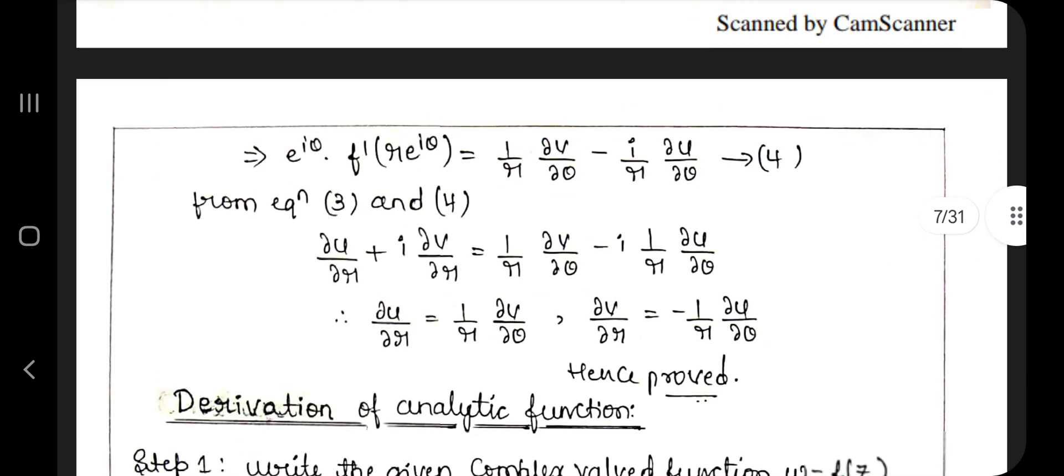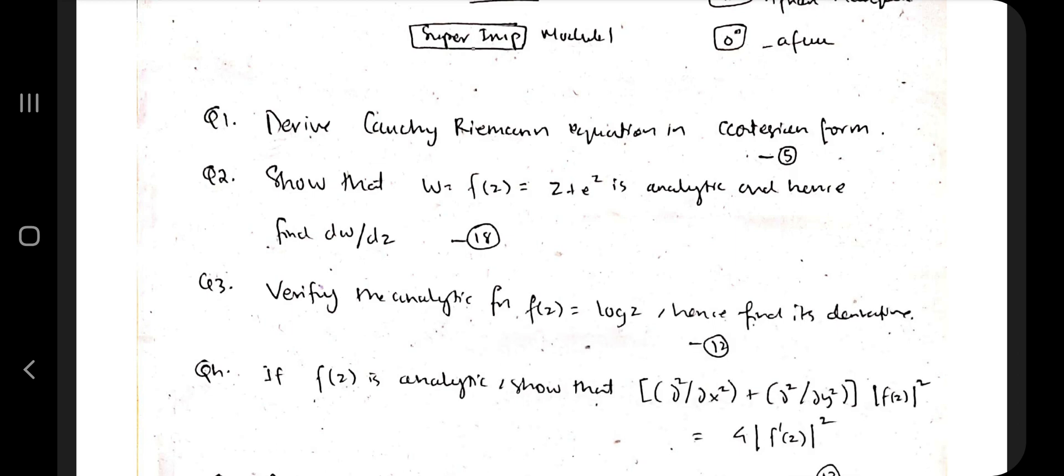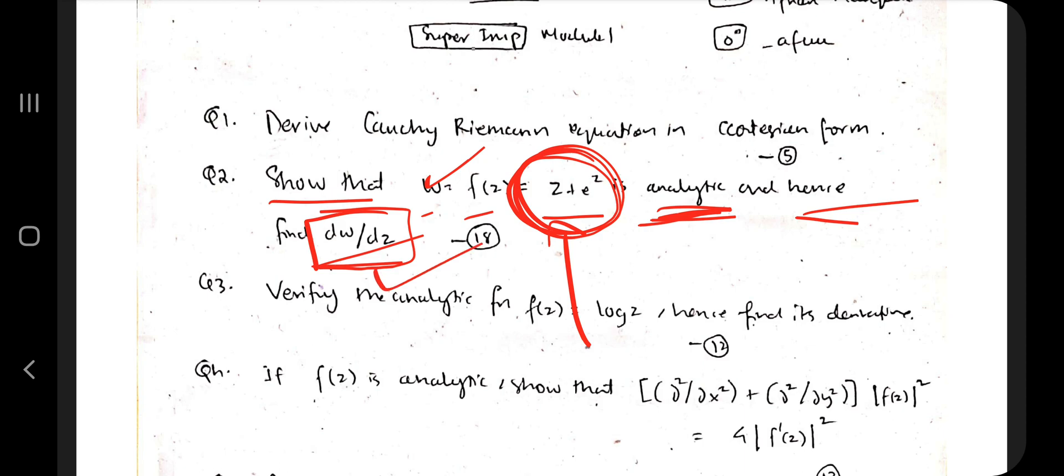Moving on to the second question: w equals z plus e to the power z is analytic, and hence find dw by dz. The point in mathematics is not regarding the specific formula, it's regarding the technique. Do you know the technique to solve this? That's the main question. If you know the technique, you can answer any question. Make sure you know the technique. This is where you will be given a function, it is given as analytic, and you have to show it is analytic and find its derivative. I've explained how to solve any question under that type in my original 18 MAT 41 theory video.